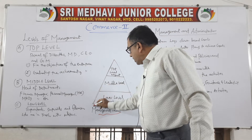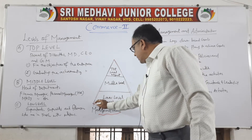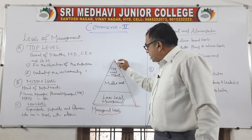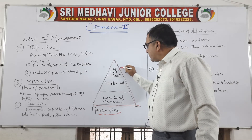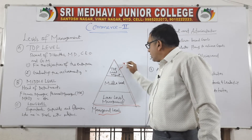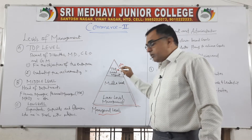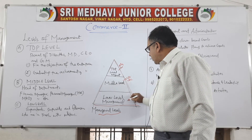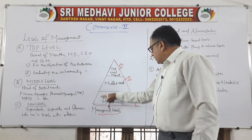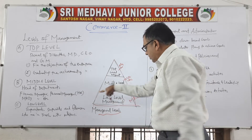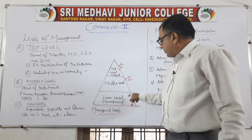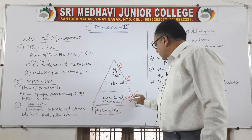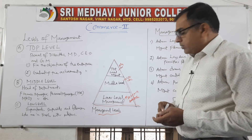If you see this triangle, what do you observe? At top level management, as this area is small, only few people will be there. A little more people are at the middle level, and too many people will work at the lower level management.